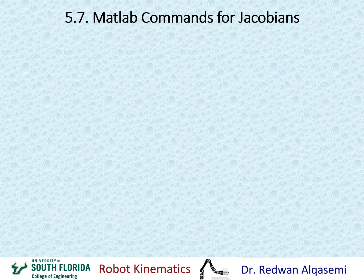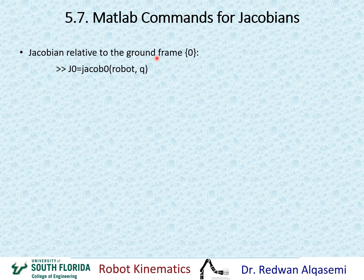We're now moving toward MATLAB commands relevant to the Jacobian, using MATLAB Release 2020A with the Robotics Toolbox from Corke. The first command computes the Jacobian relative to the ground frame, frame 0. The syntax is: your variable equals Jacob0(robot, q), where the robot must be defined earlier and q is a column vector of joint angles. This command returns the Jacobian relative to frame 0.